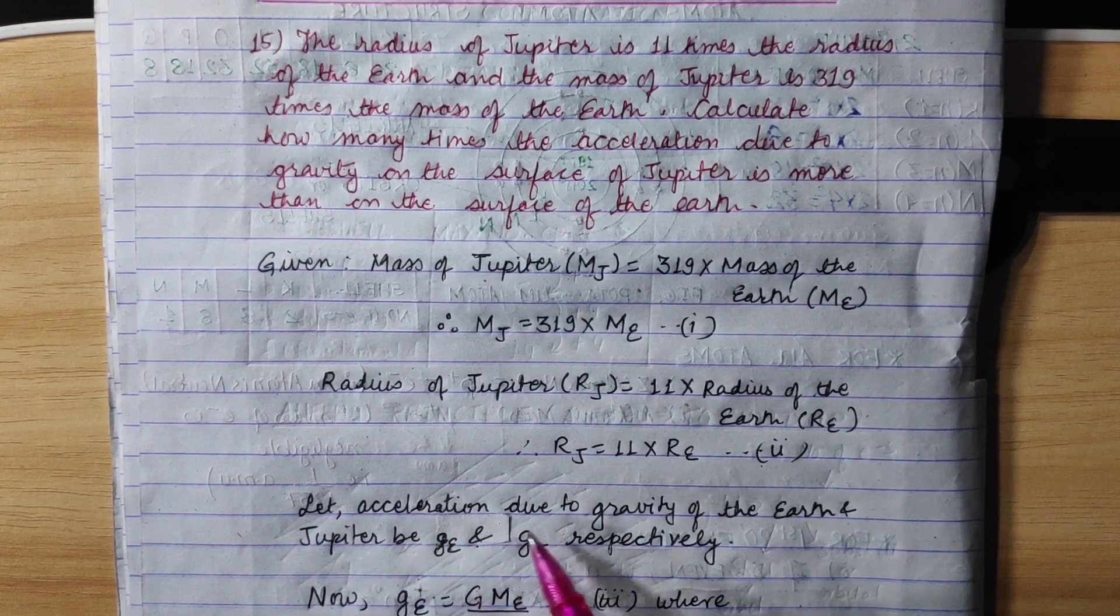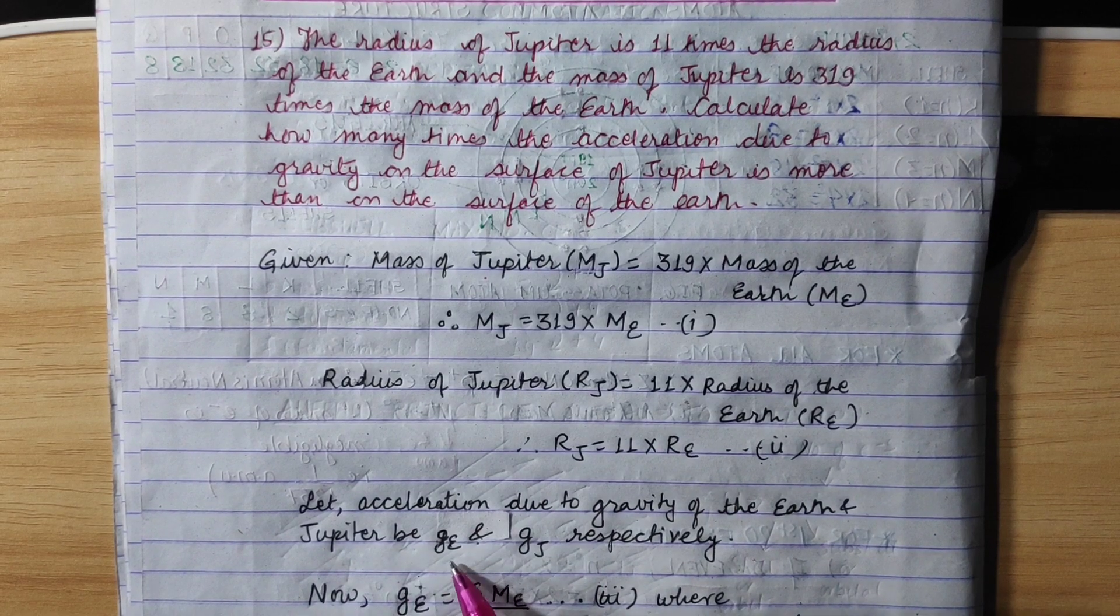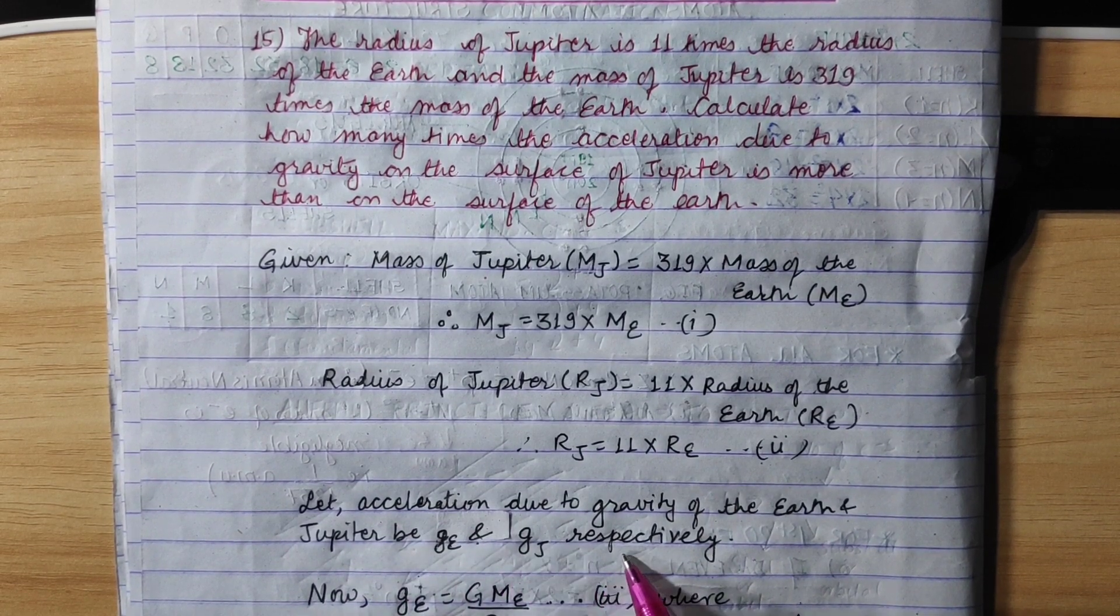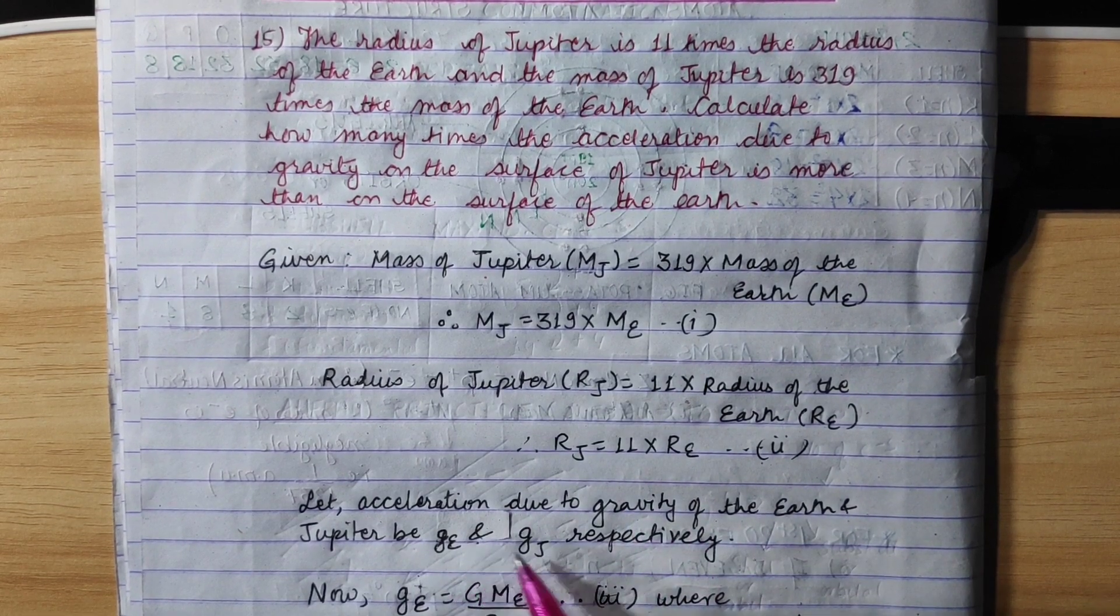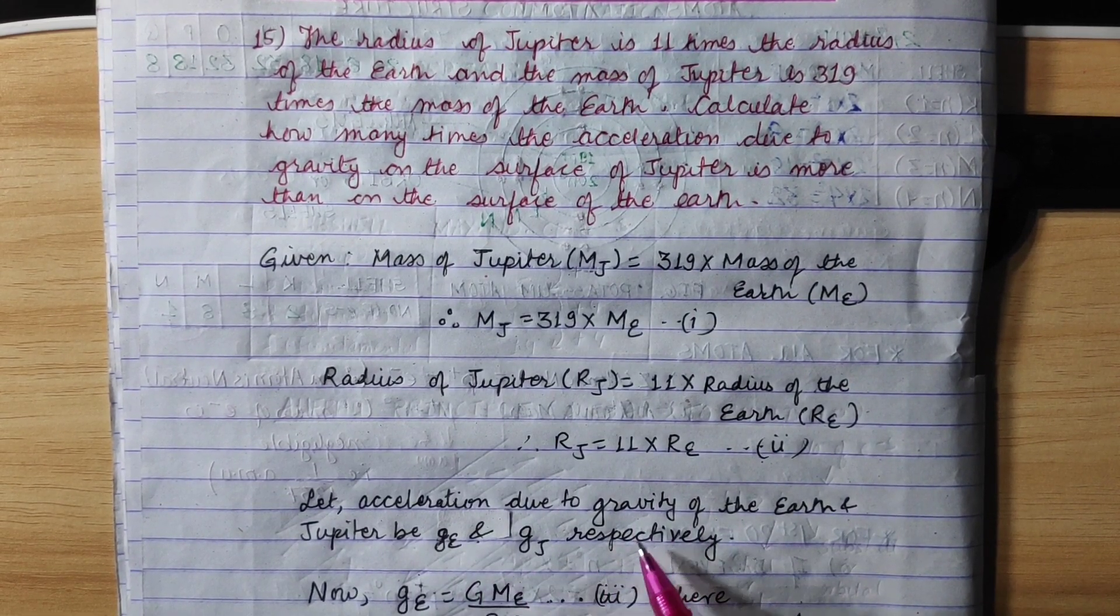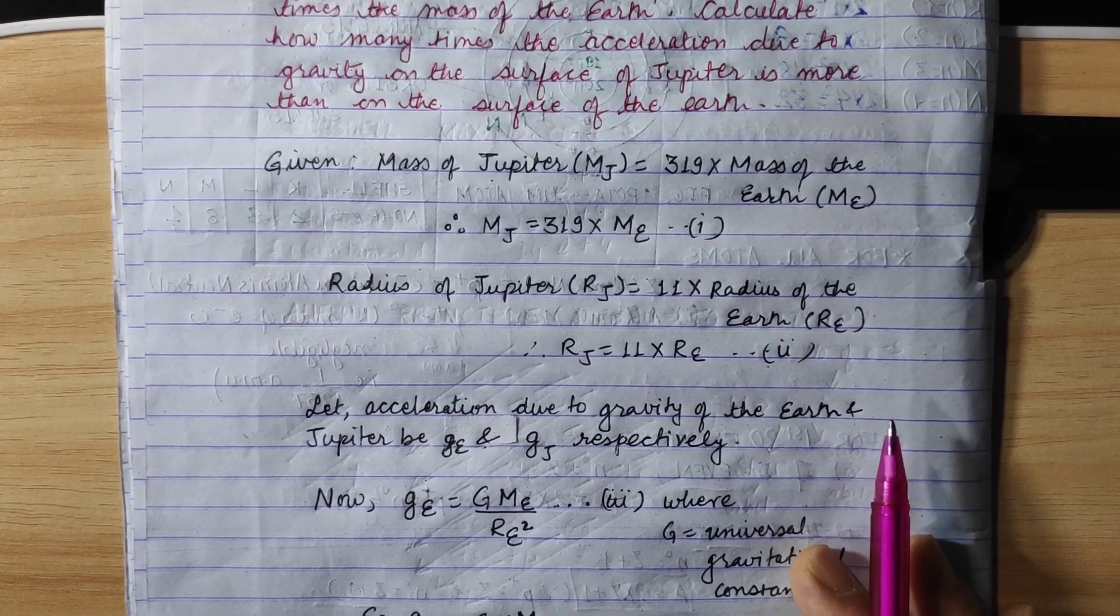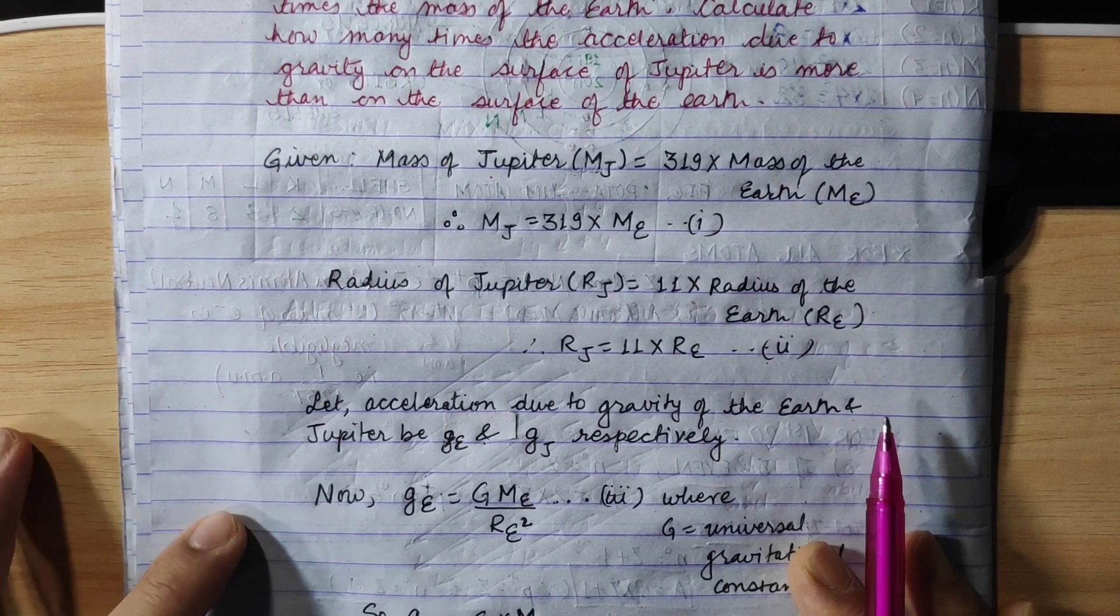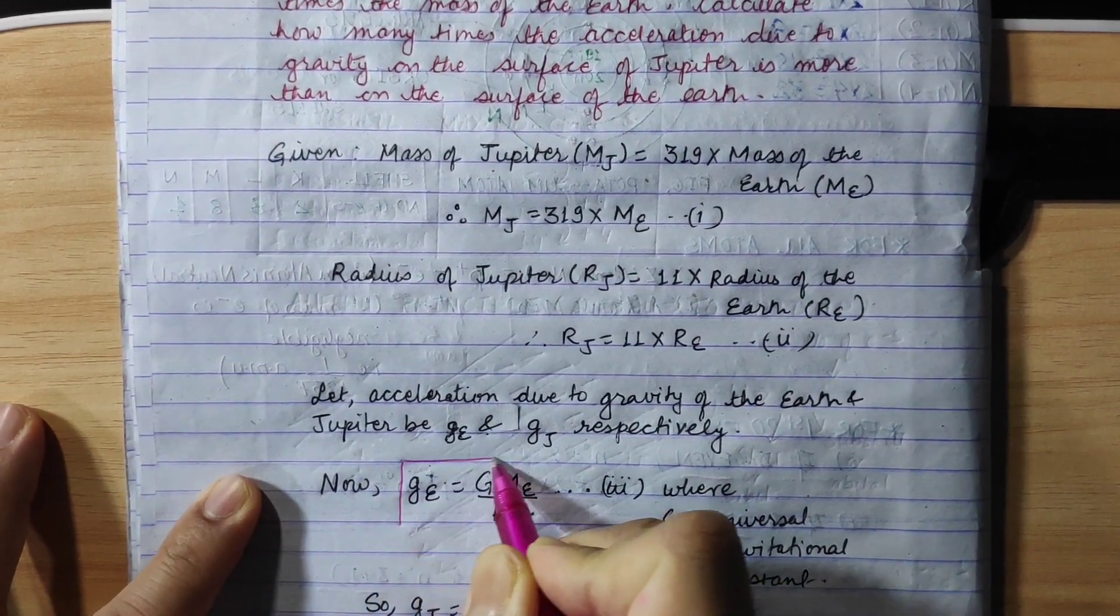Let the acceleration due to the gravity of the Earth and Jupiter be Ge and Gj respectively. We will find the acceleration using g equals GM upon R squared.